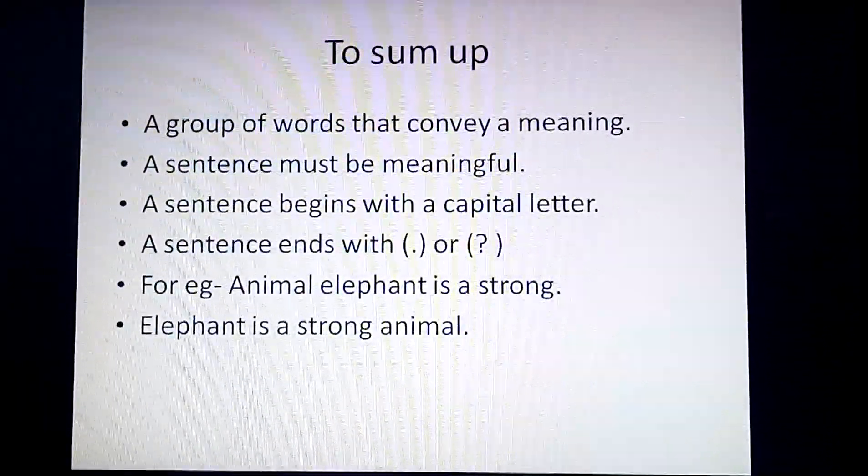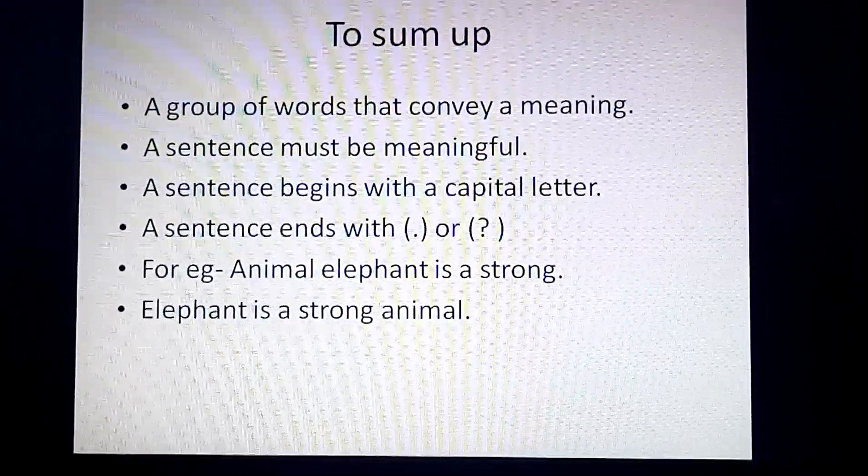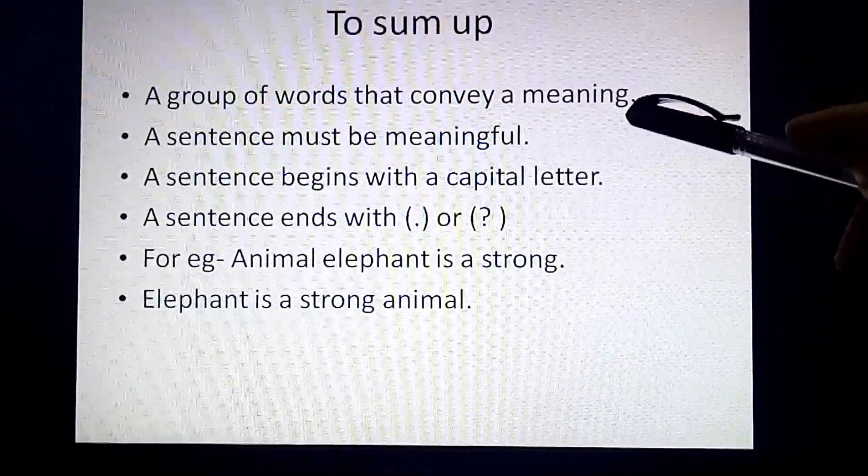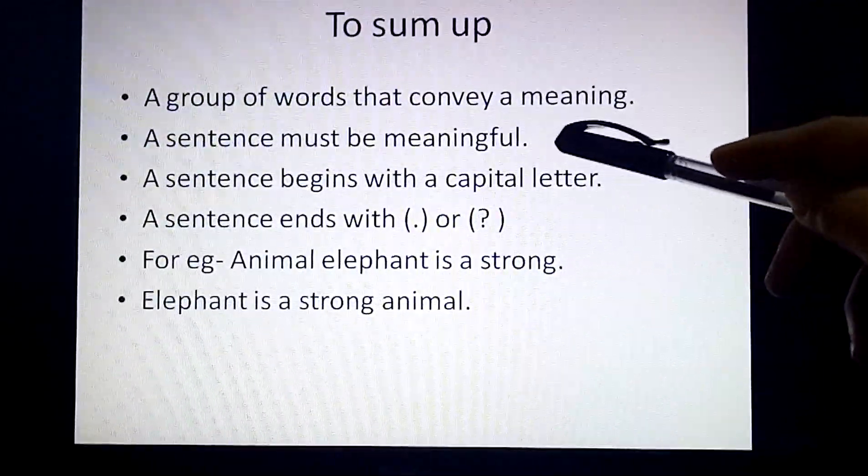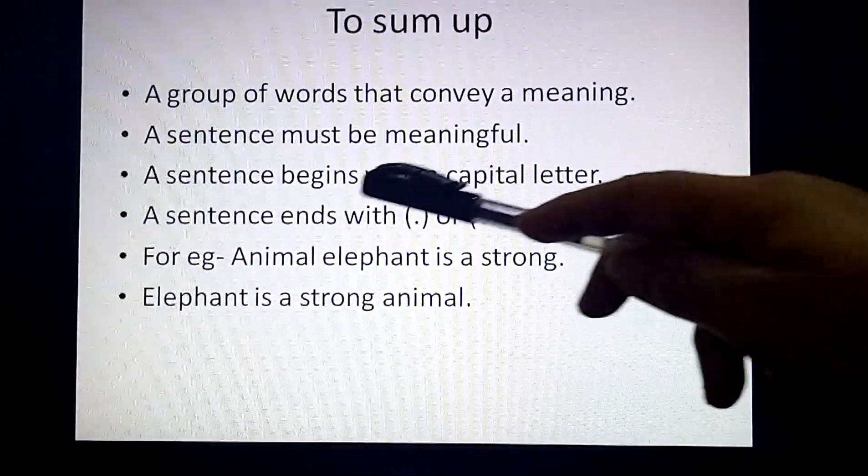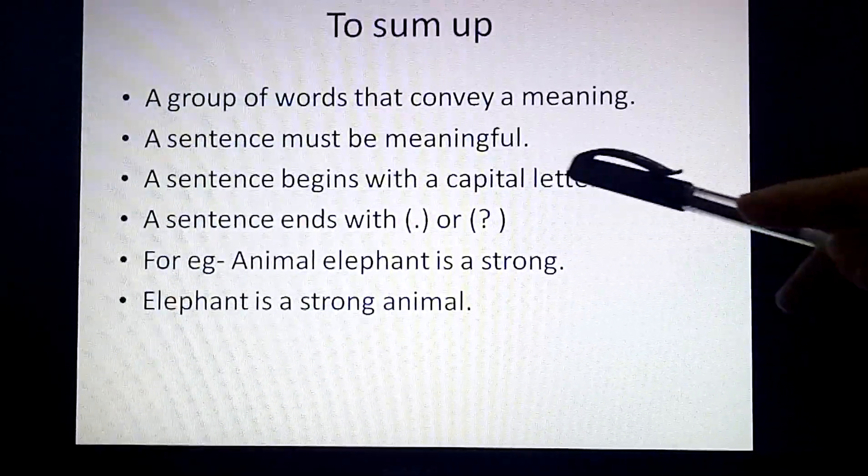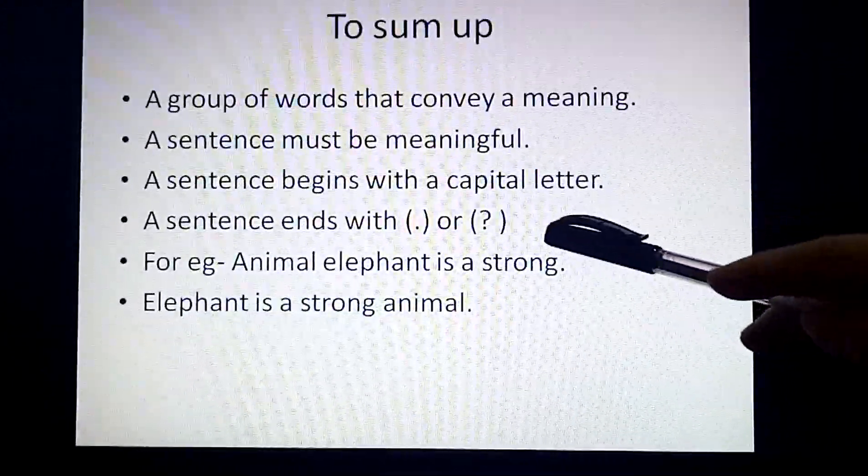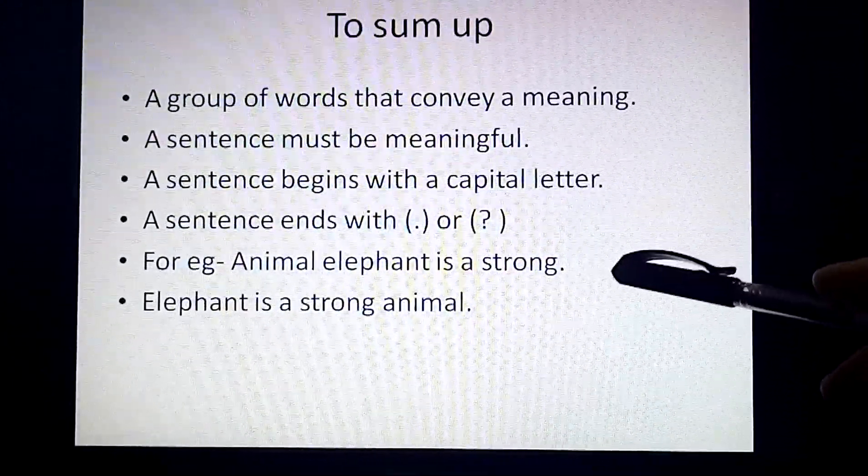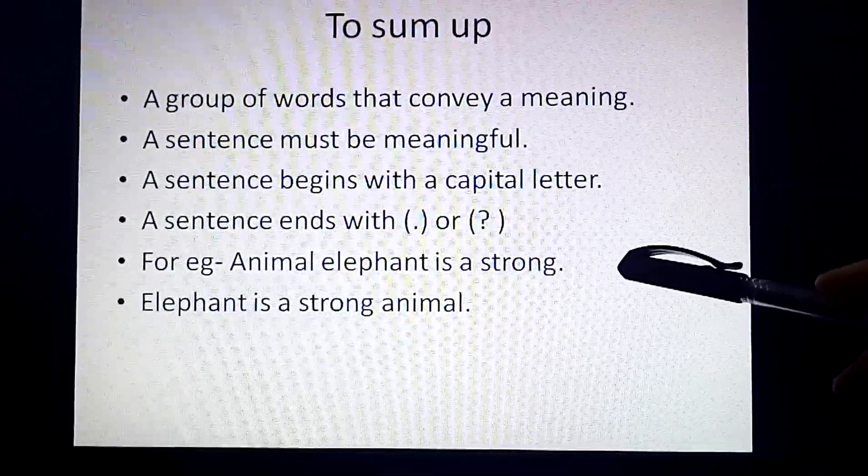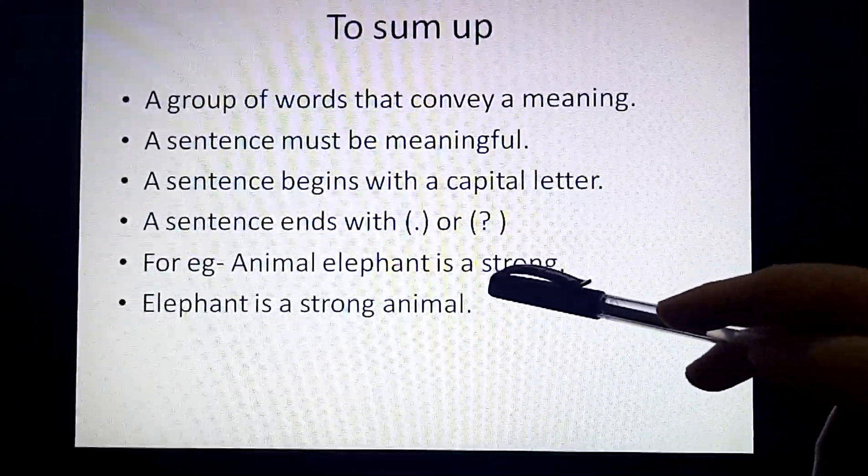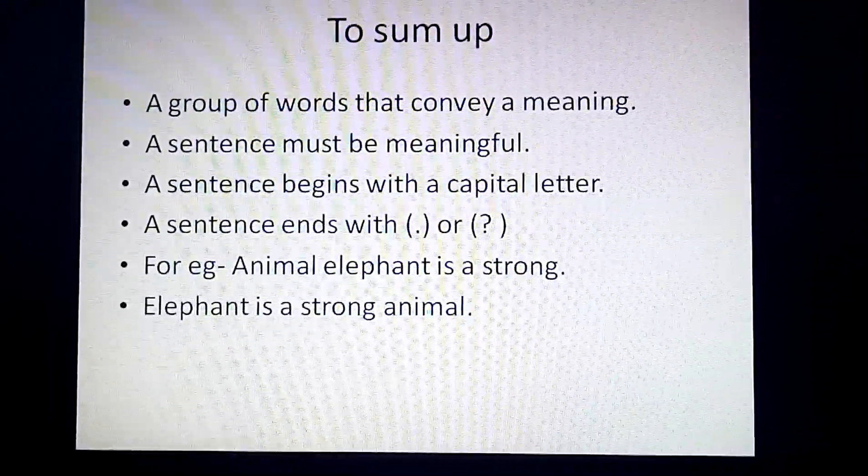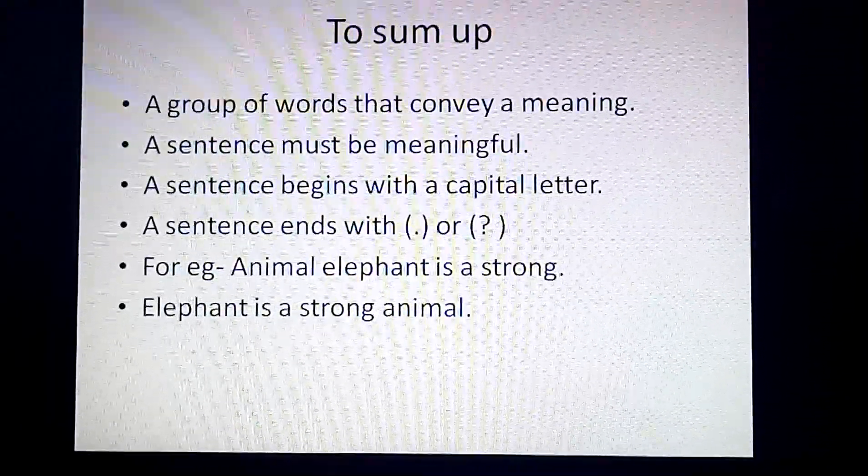So, to sum up, what is a sentence? A sentence is a group of words that convey a meaning. A sentence must be meaningful. A sentence begins with a capital letter. A sentence ends with a full stop or question mark. For example: Animal elephant is a strong. We cannot understand anything. So, this is not a sentence.